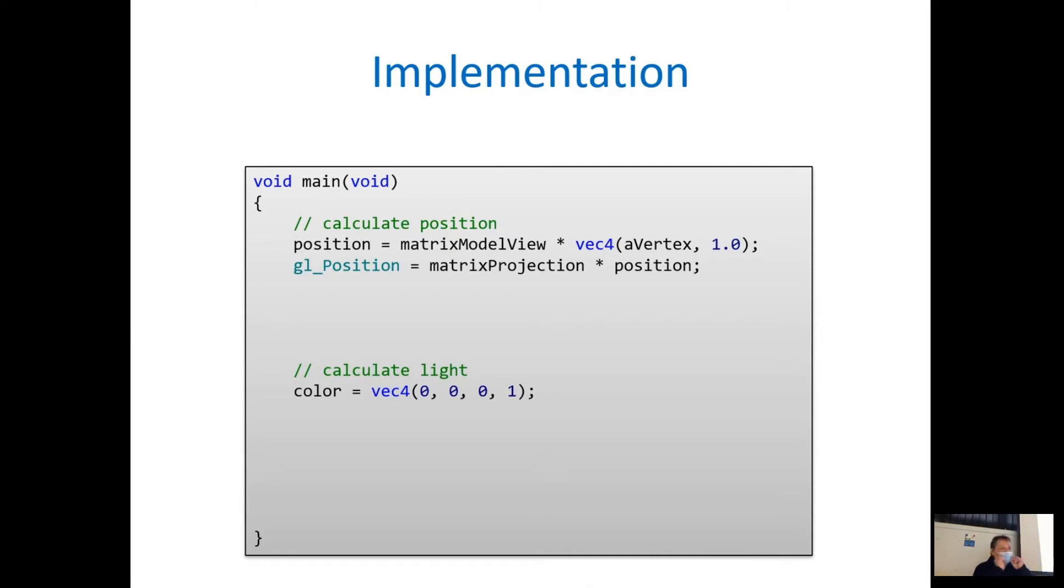So you have to convert a vertex to four dimensions. This construction here is called a constructor. We construct a four-dimensional vector. These constructors have been explained in the second part of the Shader Technology lecture. For now, I will give you a very quick explanation. We want to create a vec4. Vector 4 is four-dimensional, so it needs four dimensions: x, y, z, w. X, y, z will be taken from vertex, and the missing fourth dimension w will be 1.0. This is how you can easily promote a vector of lower dimensionality to a vector of higher dimensionality.